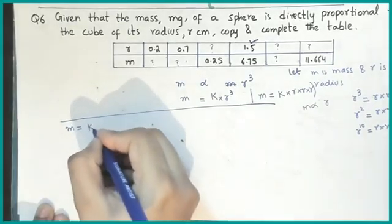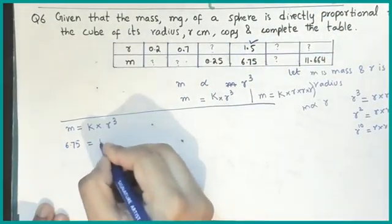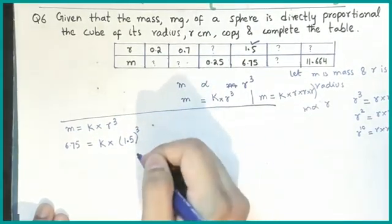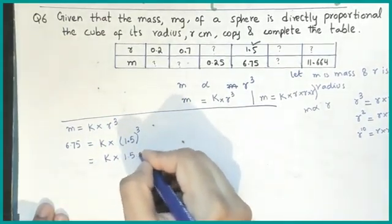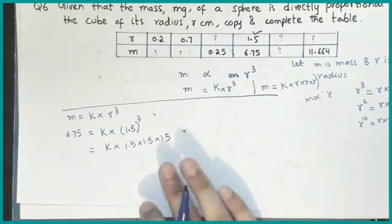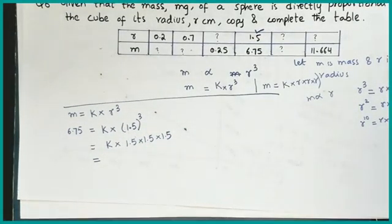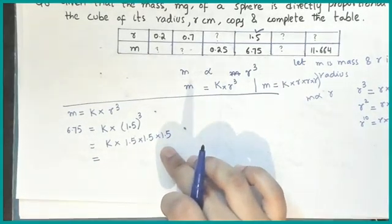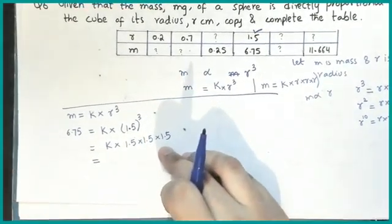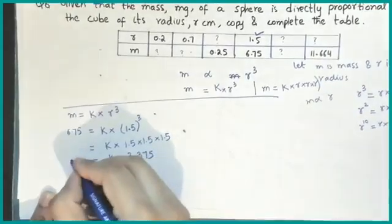m is equal to k times r cubed. The value of m given is 6.75, and r given is 1.5. So 6.75 equals k times 1.5 cubed. You can write 1.5 cubed as 1.5 times 1.5 times 1.5. Using a calculator, 1.5 cubed gives 3.375. So we have k times 3.375 equals 6.75.